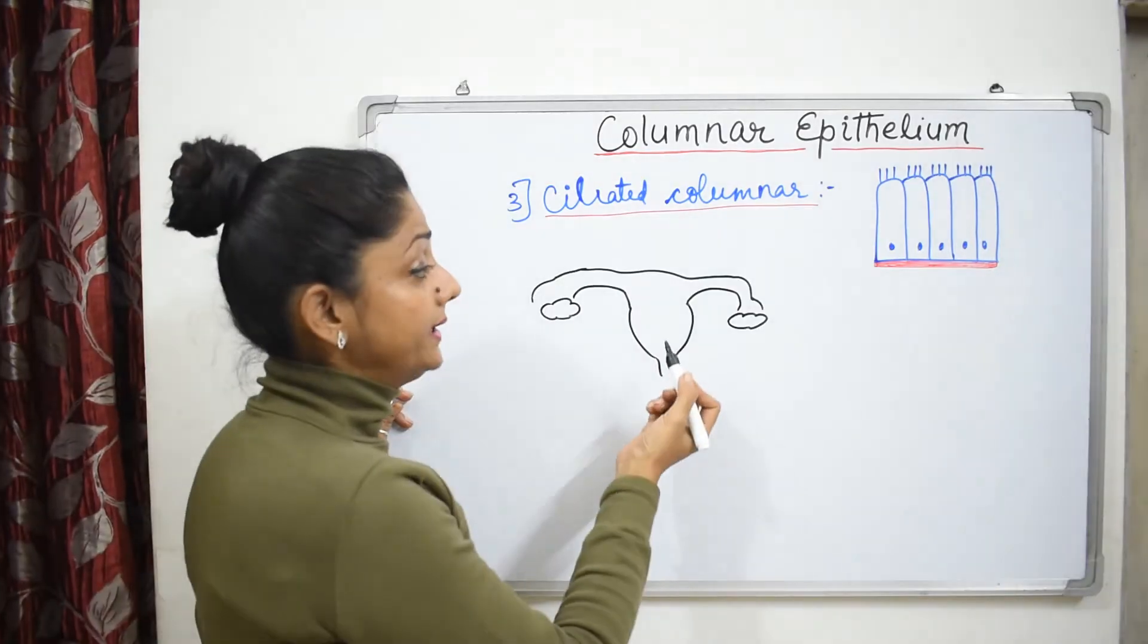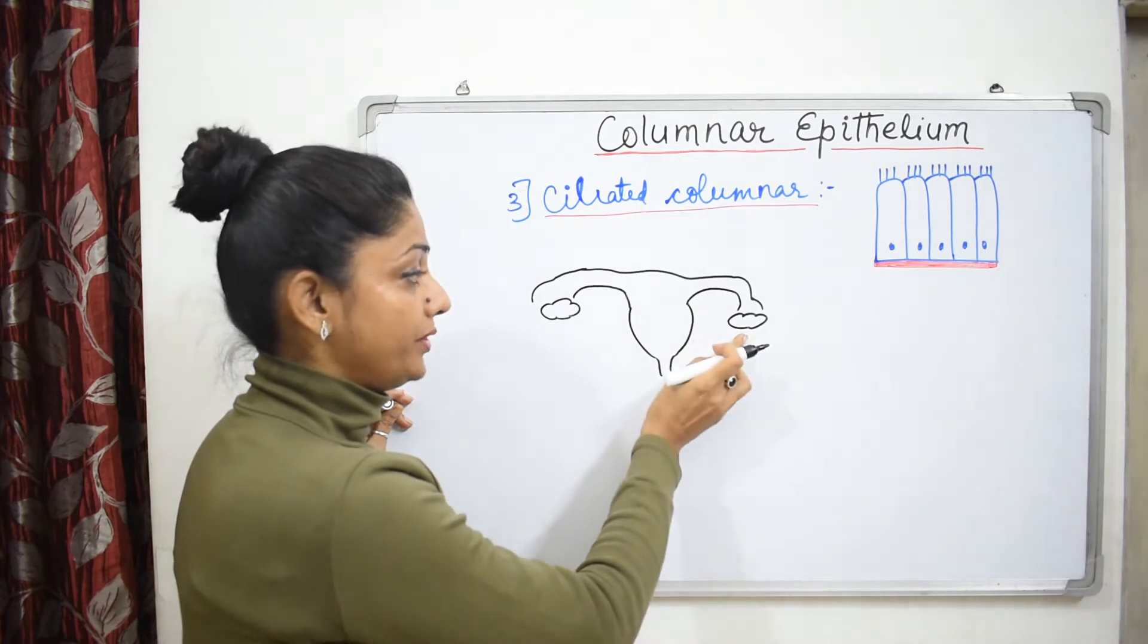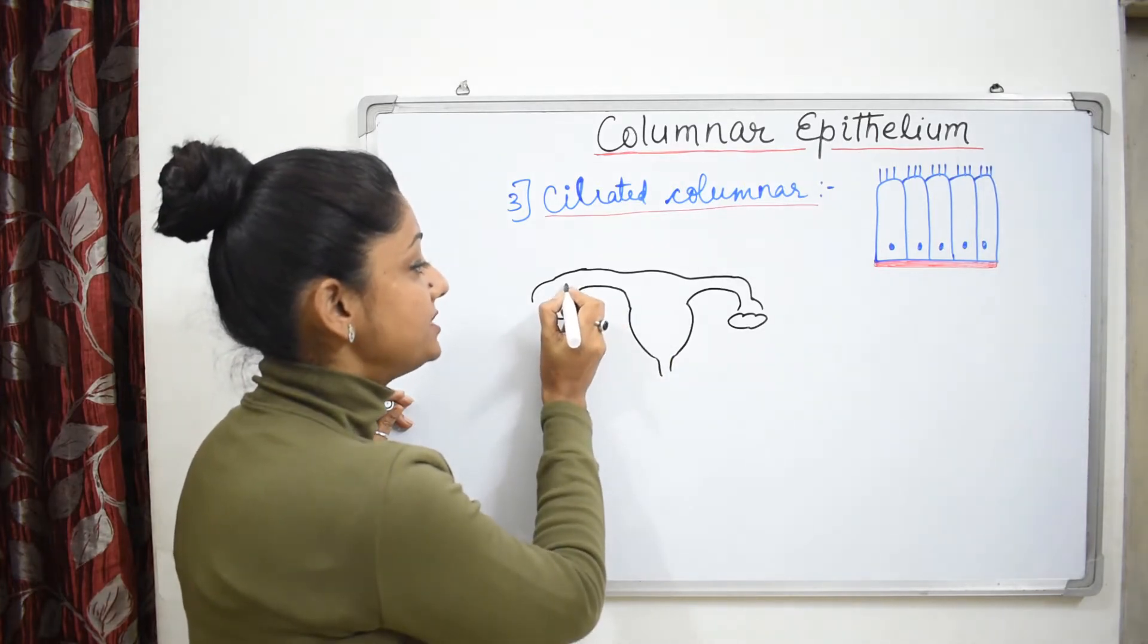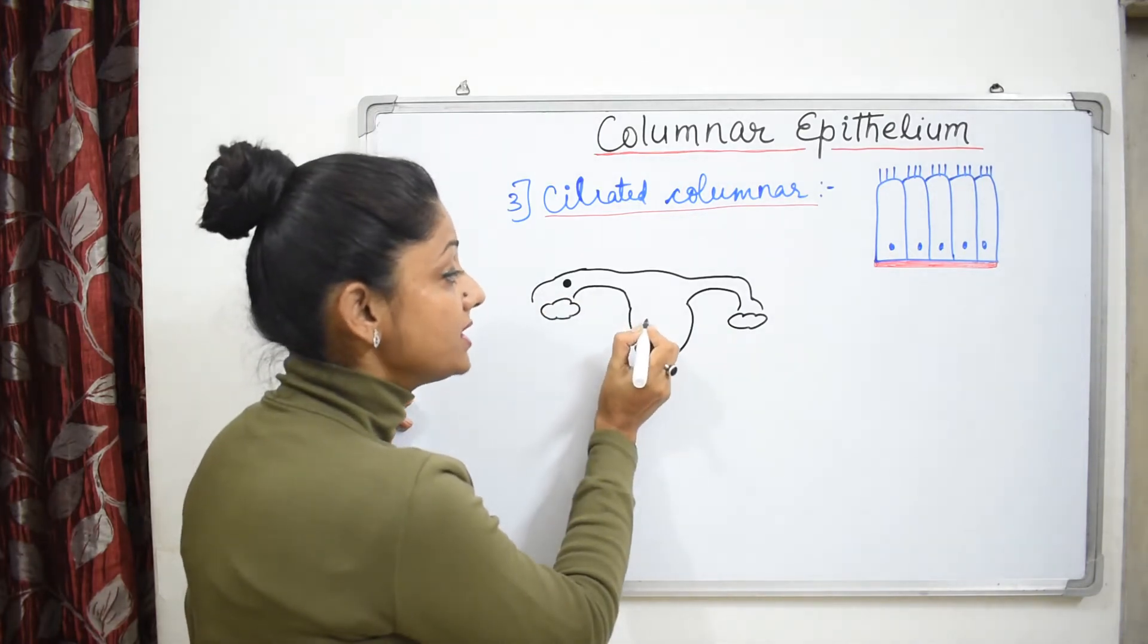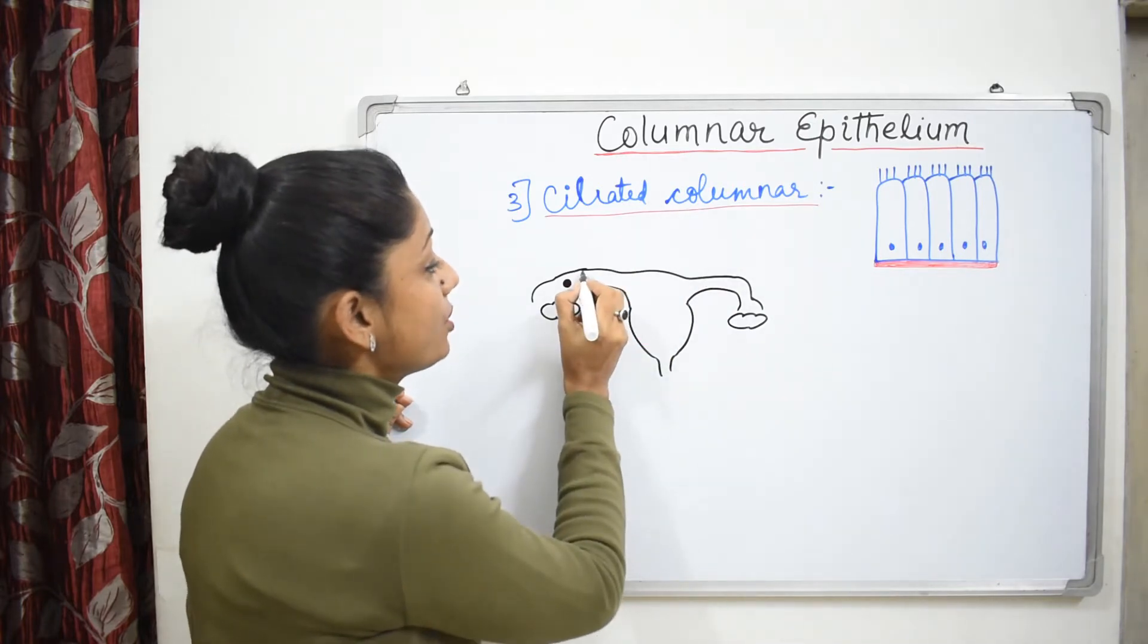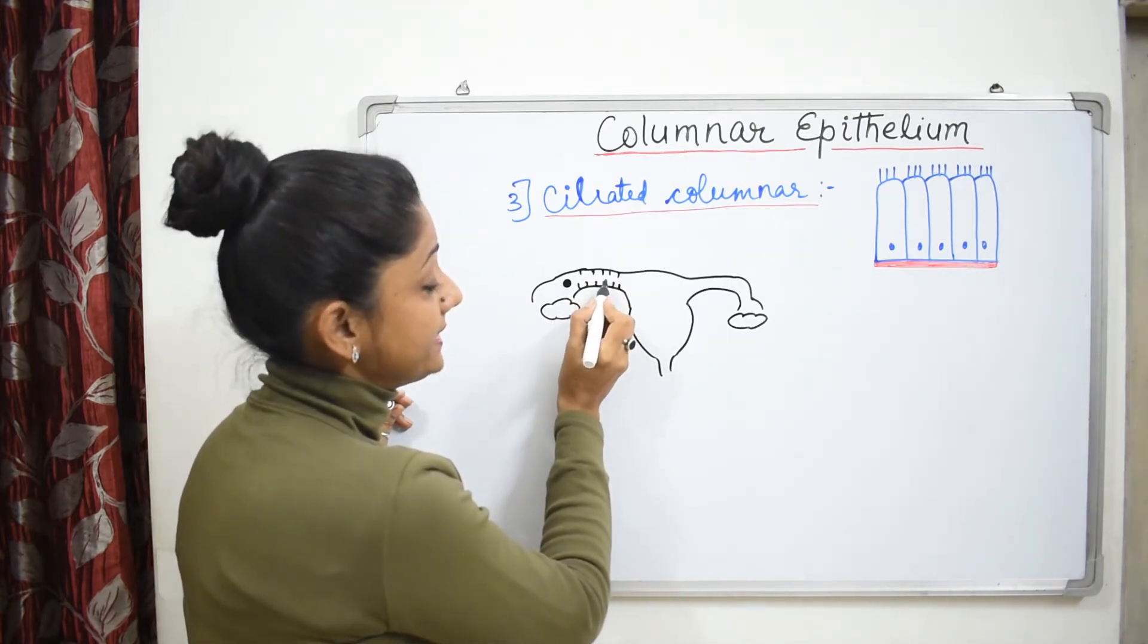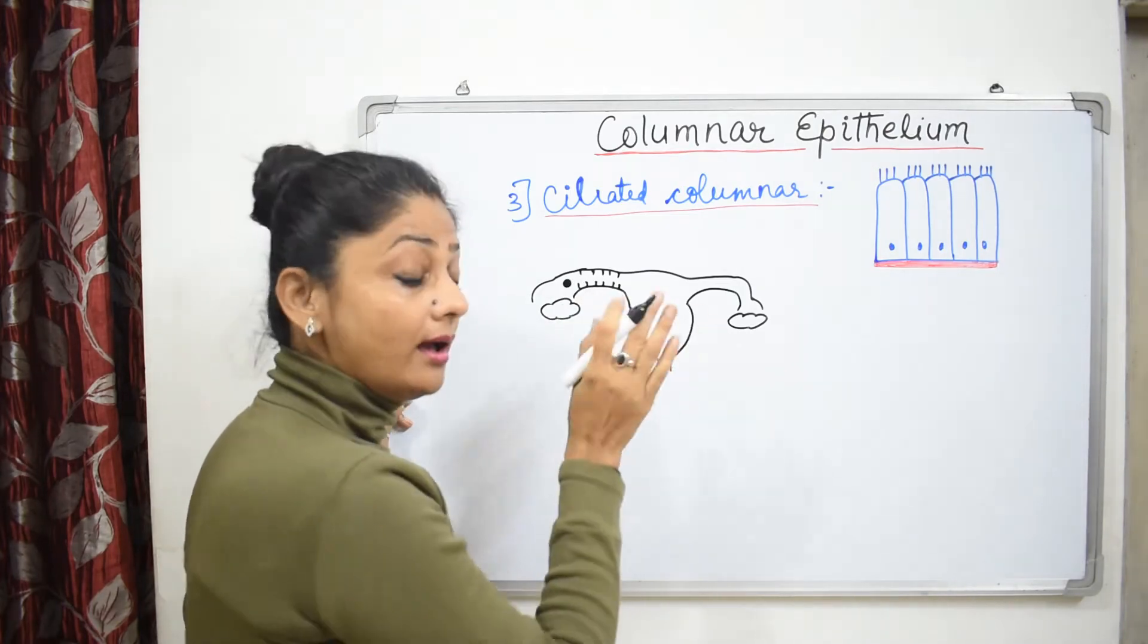This is the human female reproductive system. This is an ovary, this is a fallopian tube, and this is a uterus. Here is fertilization and zygote is made here, but zygote's development is here. This ciliated columnar can be found in the fallopian tube and helps the zygote to move from here to here.